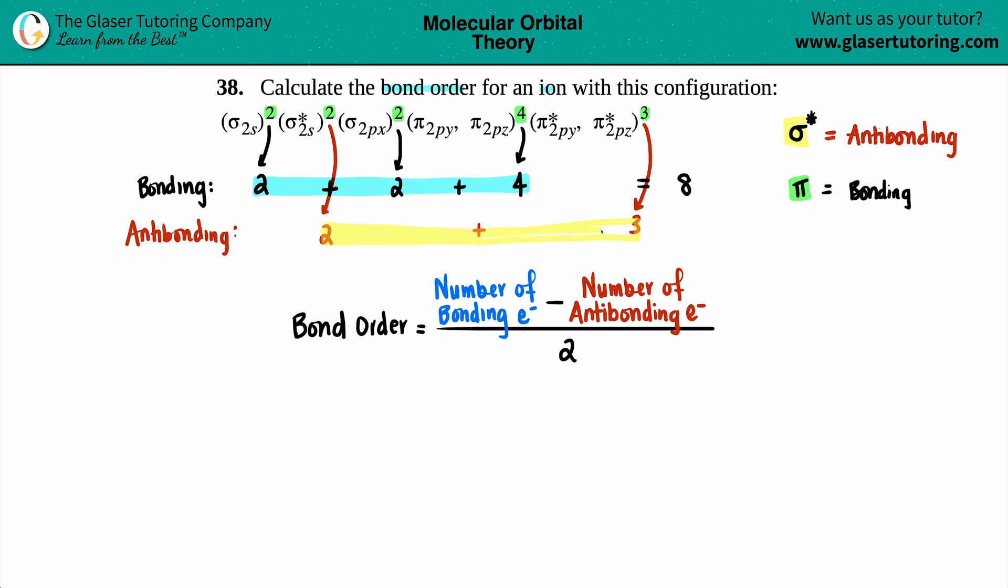If I group the antibonding together, we have two plus three—two plus three is a total of five. So I got five antibonding electrons. I have eight for the bonding, I got five for the antibonding. Now we know what the numbers are going to be.